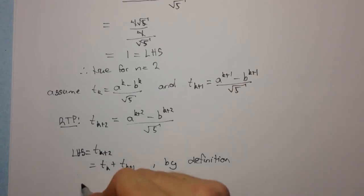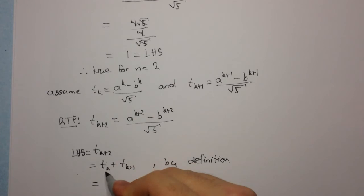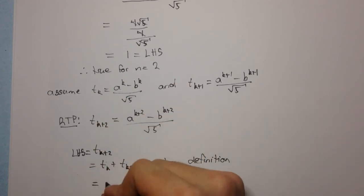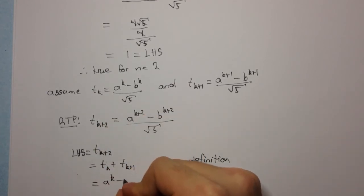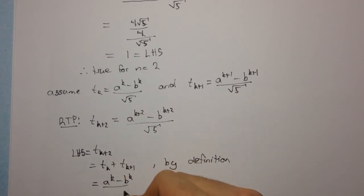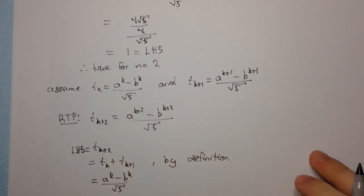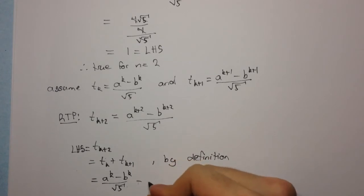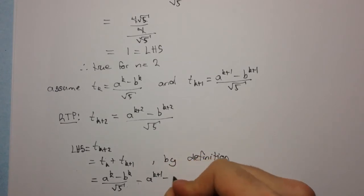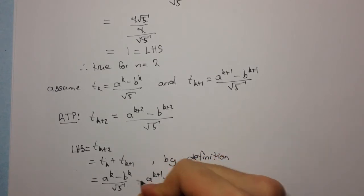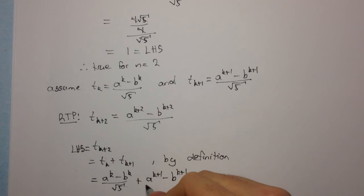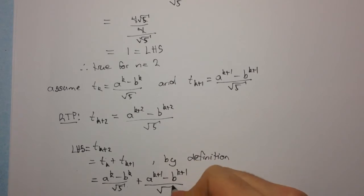By our assumptions, we have that these two are equal to these expressions here. So we have (aᵏ minus bᵏ) over root 5, plus (a^(k+1) minus b^(k+1)) over root 5.